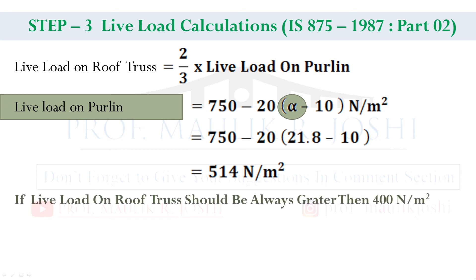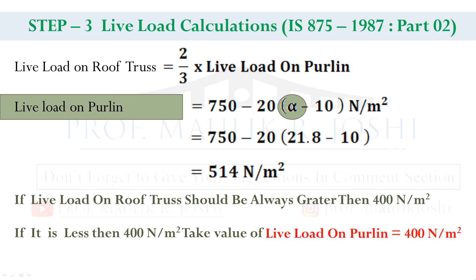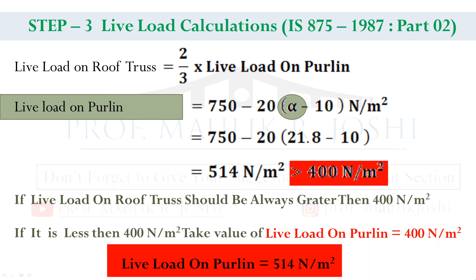The final answer for live load on the purlin comes to 514 newton per meter square. Here you must keep in mind that whatever live load value comes on the purlin, it should always be greater than 400 newton per meter square. If in any case the value is less than 400, we assume the value as 400 newton per meter square. Here our answer 514 is already greater than 400, so there is no problem. Live load on purlin is equal to 514 newton per meter square.